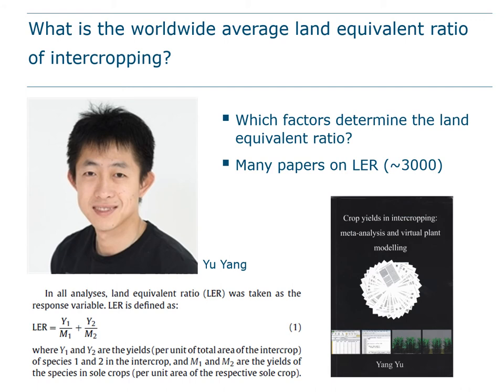Yu Yang's metric was the land equivalent ratio (LER). It is the yield of the first species (Y1) in the intercrop divided by the yield of the same species in the sole crop (M1), plus the yield of the second species (Y2) in the intercrop divided by its sole crop yield (M2). Y1/M1 is called the partial land equivalent ratio of species 1, also known as the relative yield of species 1, and Y2/M2 is the partial LER for species 2.